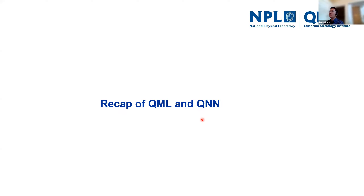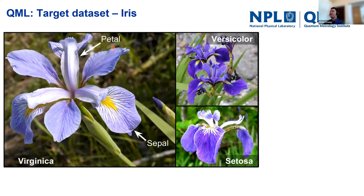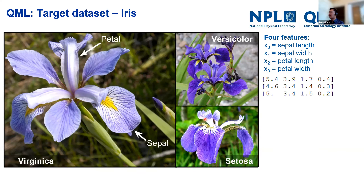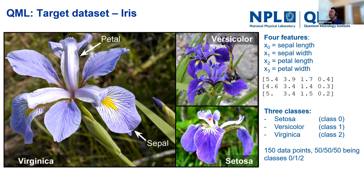In machine learning tasks, the first thing we determine is the target problem or dataset. Here we're interested in classifying iris flowers. Each iris flower is characterized by four features: sepal length and width, and petal length and width — numbered zero to three. These are floating point numbers that fully characterize what an iris flower looks like.